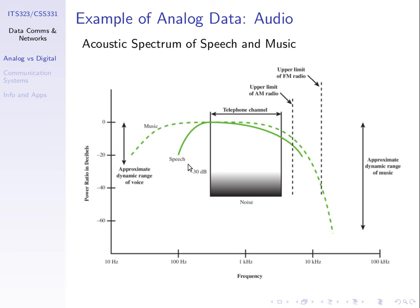A hertz is a measure of how often something changes — a cycle. Speech ranges from about 100 Hz up to 10 kHz. For lower frequencies around 100 Hz, the strength is quite weak — we don't usually make loud sounds at very low or very high frequencies. The peak strength of our voice is in the middle range. The dashed green line shows similar data for music, which ranges from tens of hertz up to maybe 20 or 30 kHz — a higher range than speech.